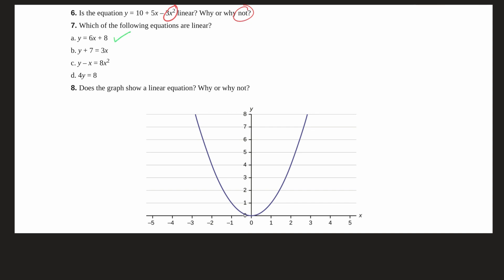So for b, we have y plus 7 equals 3x. Now we can leave it like this, or we can rearrange it in a form that we're comfortable with. So y plus 7 equals 3x. Let's say we want to get y by itself, isolate y. So we would subtract 7 from both sides. So that would subtract out. And then we would have y equals negative 7 plus 3x. So we don't have anything squared there. And this is a linear equation.